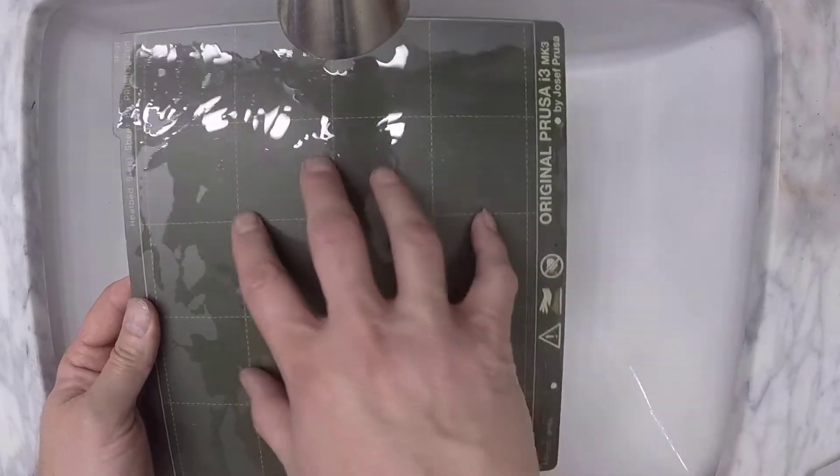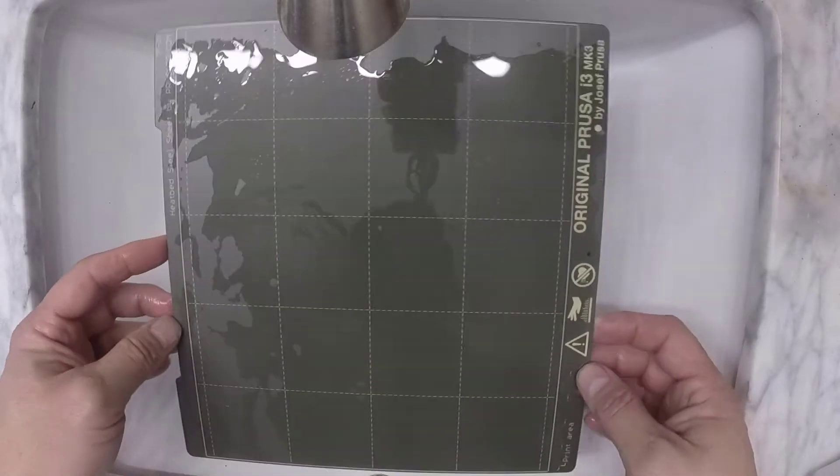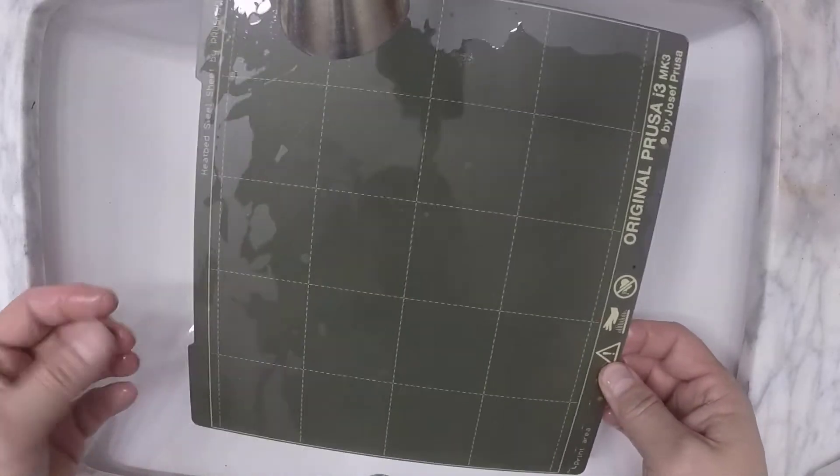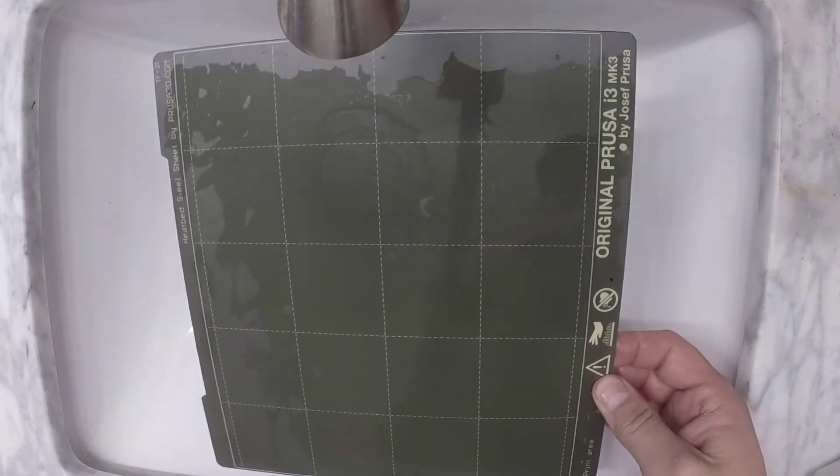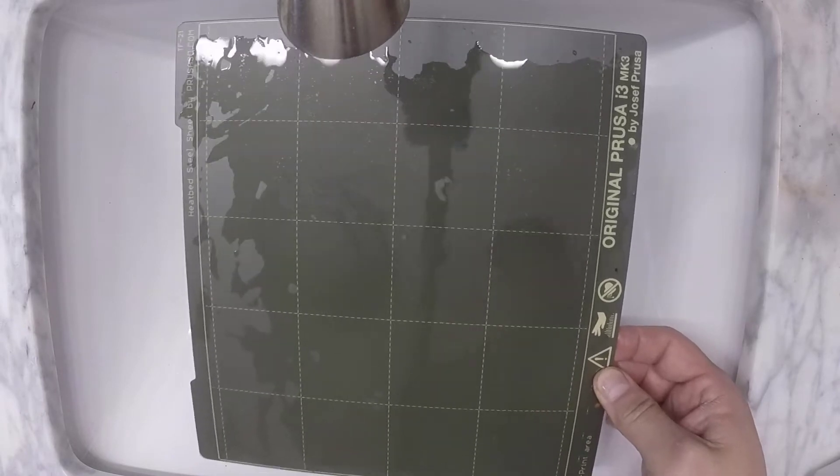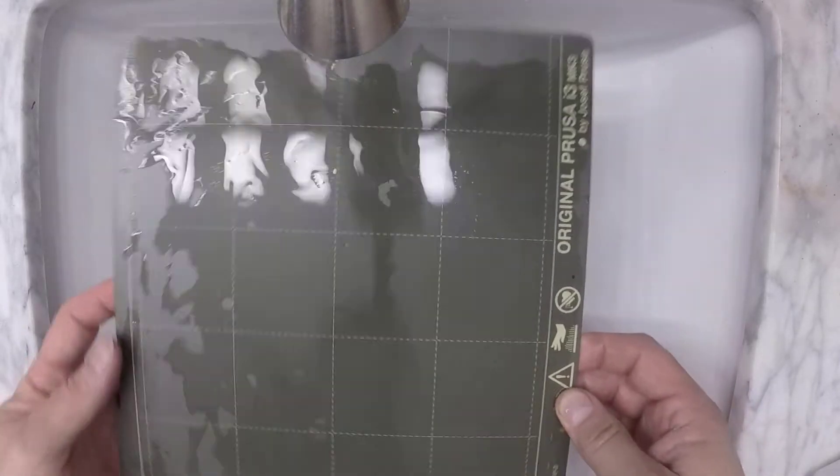They might not all come out, but that's all right. What you're looking for is you're looking for that to be completely smooth and you'll feel it too. The same as the irregular PEI. So anyways, that's how I clean it pretty quick and easy.